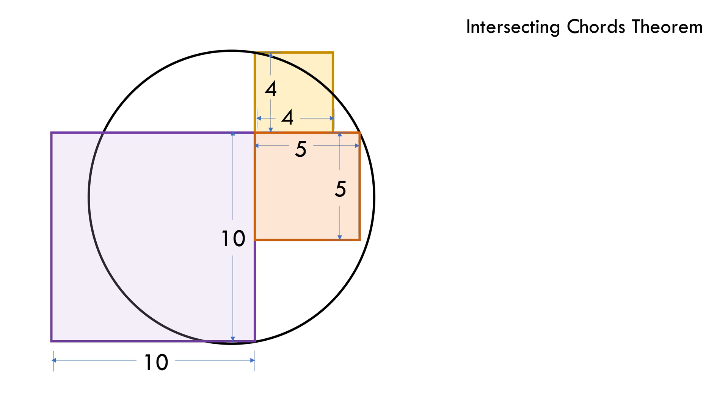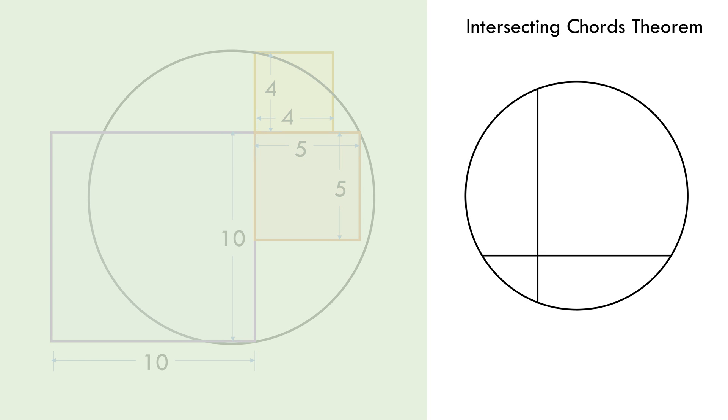To understand this theorem, let this be a circle and these two lines be the chords to the circle. Now if we mark the four line segments created because of intersection of these chords within the circle as a, b, m, and n.